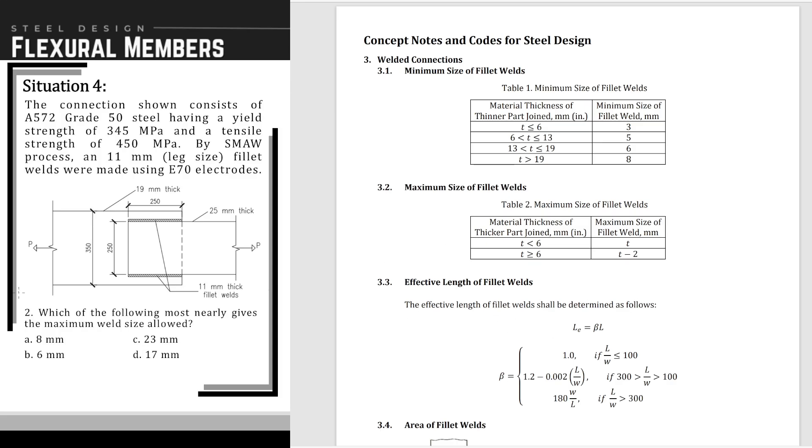Which of the following most nearly gives the maximum weld size allowed? For maximum weld size, we base it on the thicker part, so we base it on the 25mm thickness. That is greater than 6mm.